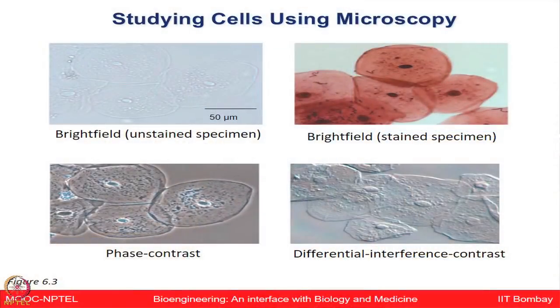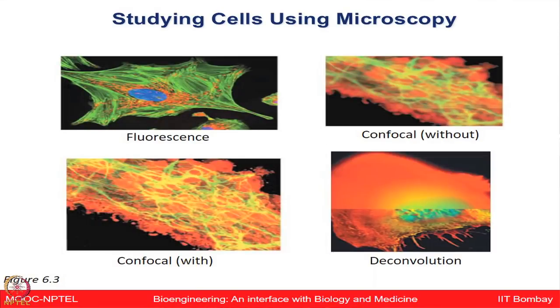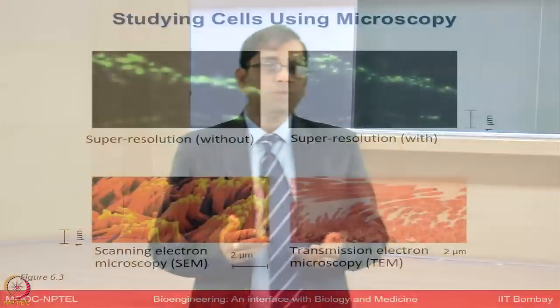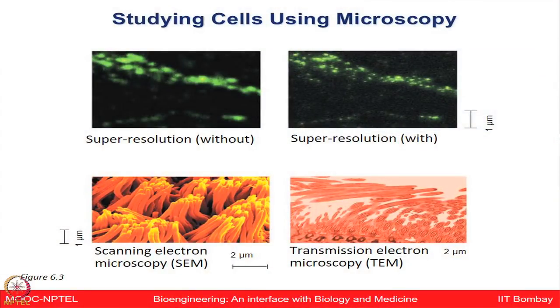From the left: the bright field image for the unstained specimen, then the stained specimen image, then the phase contrast image, then differential interference contrast. Next is the fluorescence image, then confocal without and confocal with, then the deconvolution image, and super resolution. Then there is scanning electron microscopy (SEM) and transmission electron microscopy (TEM). All variants except SEM and TEM are light microscopy; SEM and TEM are electron microscopes.